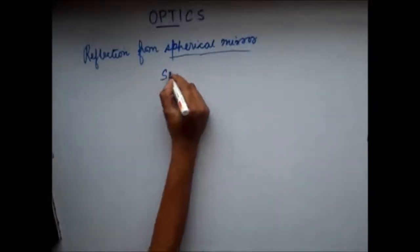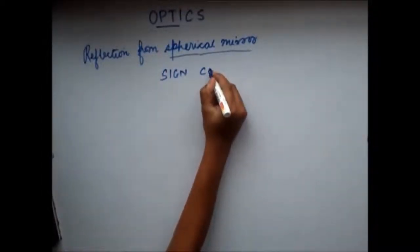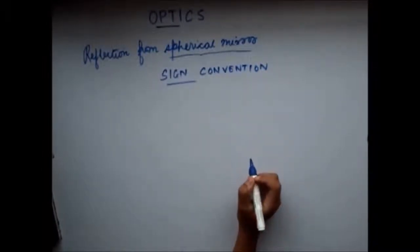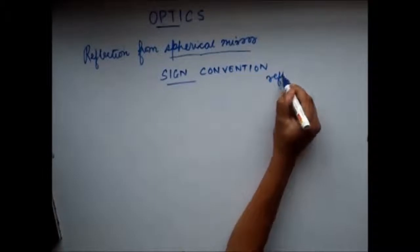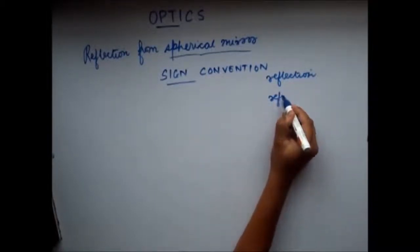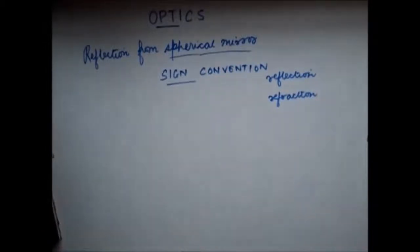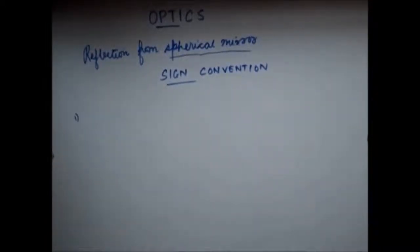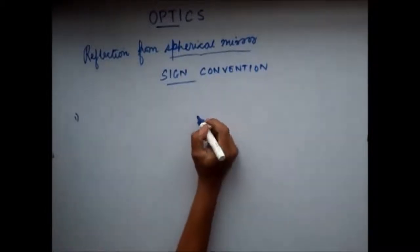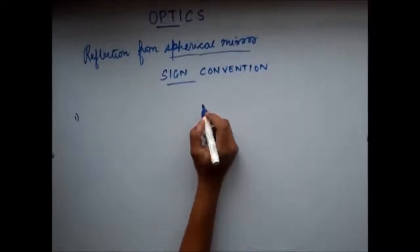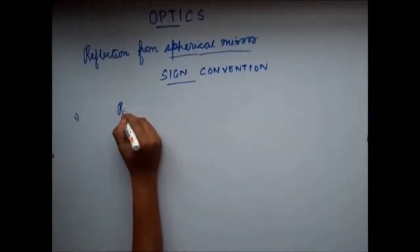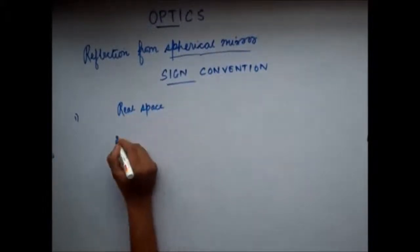Now let's understand the sign convention. The sign convention I will discuss now will be valid both in case of reflection as well as refraction. So this is a generalized sign convention which I will be following throughout this chapter of Optics. The sign convention tells us that the reflecting or refracting object — that is the mirror or the lens — divides the space into two parts: one is known as the real space and the other is known as the virtual space.